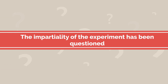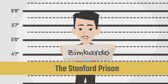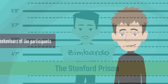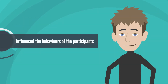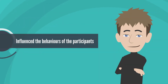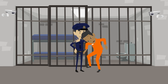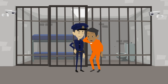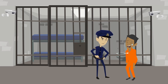Moreover, the impartiality of the experiment has been questioned, as Zimbardo himself played an active role as the prison superintendent, which may have influenced the behaviours of the participants. There have also been accusations that the guards were subtly encouraged to be aggressive, thus influencing the outcome of the study.